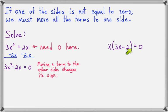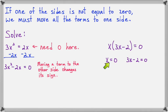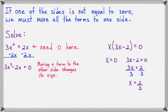If x times the quantity 3x minus 2 equals 0, one of the factors must equal 0. So x could equal 0, or 3x minus 2 could equal 0. If x equals 0, that's one solution. If 3x minus 2 equals 0, we take the 2 to the other side and divide both sides by 3, giving x equals 2 over 3. So x equals 0 and x equals 2 thirds are our two solutions.